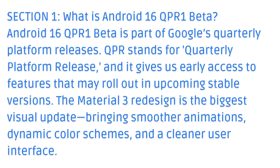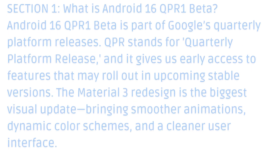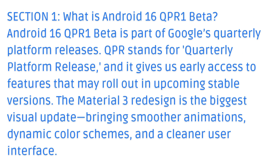Section 1: What is Android 16 QPR 1 Beta? Android 16 QPR 1 Beta is part of Google's quarterly platform releases. QPR stands for Quarterly Platform Release, and it gives us early access to features that may roll out in upcoming stable versions. The Material 3 redesign is the biggest visual update, bringing smoother animations, dynamic color schemes, and a cleaner user interface.